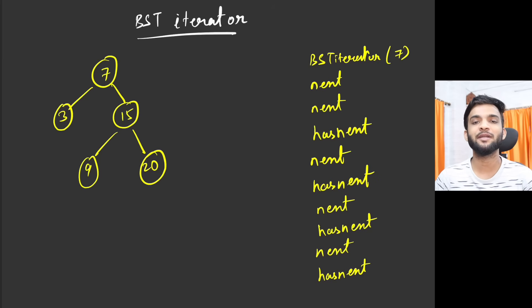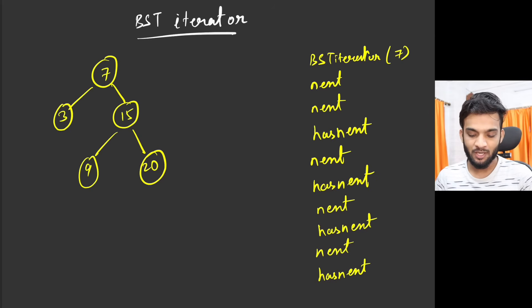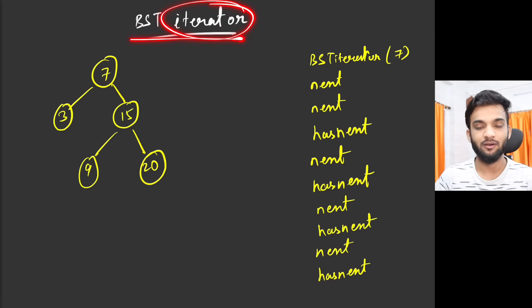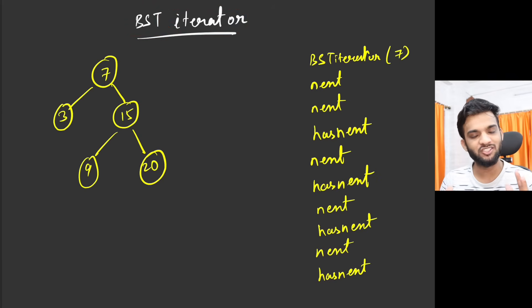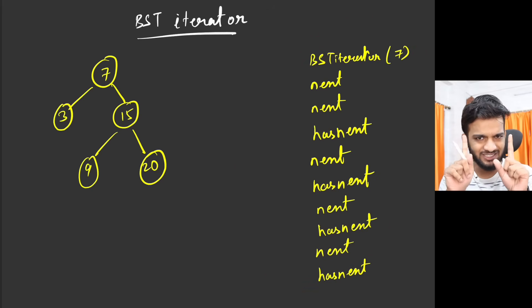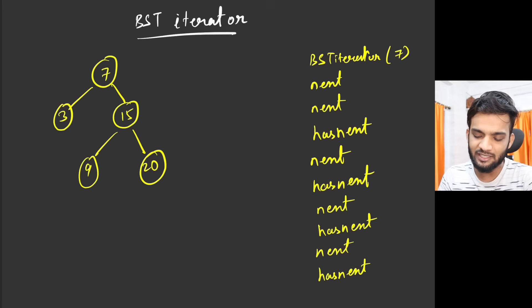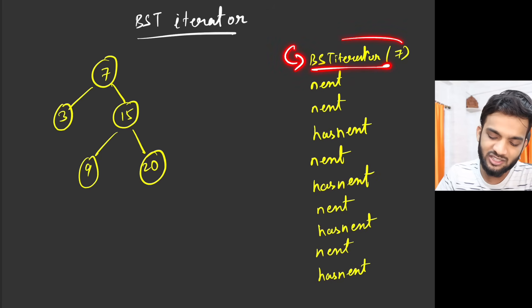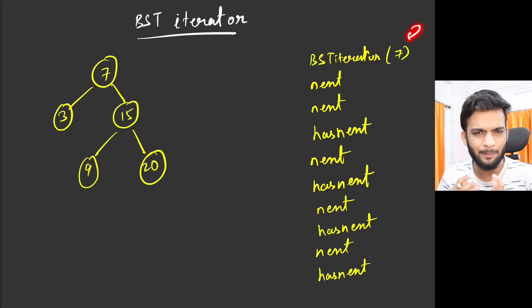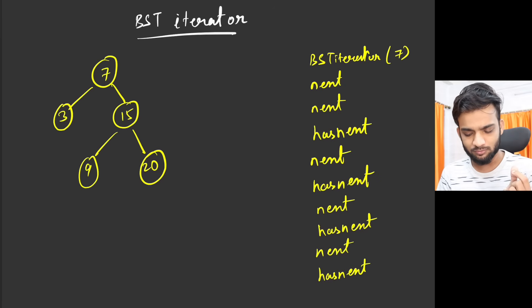Hey everyone, welcome back to the channel. Today we will be solving an interesting problem: you have to design a BST iterator. So you'll be given some steps to perform. The first step will be that you'll be given a BST iterator with the root — this seven will basically be a node containing seven, representing the root of the entire BST.